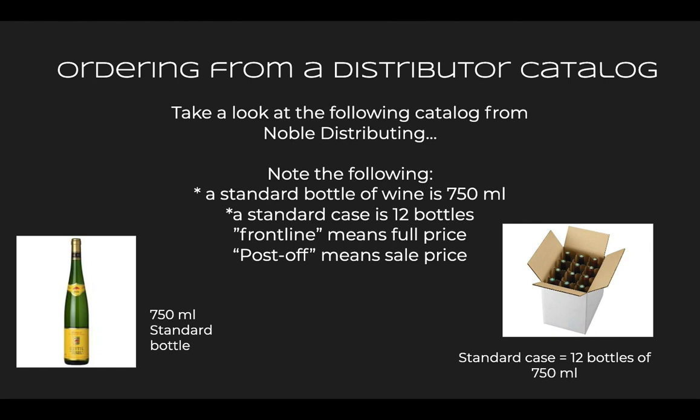Always make sure you're double-checking the area that tells you the actual size of the bottle so you're getting what you want. A standard case of wine is equal to 12 bottles. There are some variations — sometimes rare or limited edition wines come in a six-bottle case. When it comes to case size, always double-check that you are getting what you want.